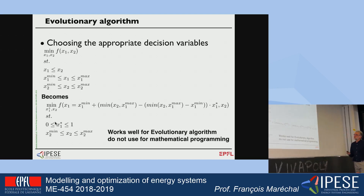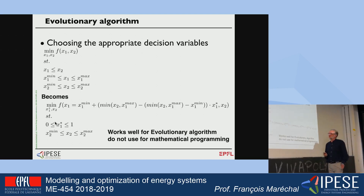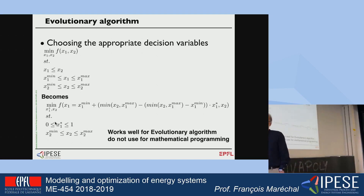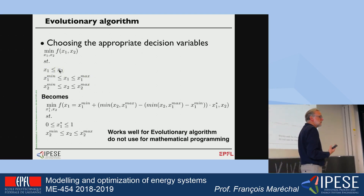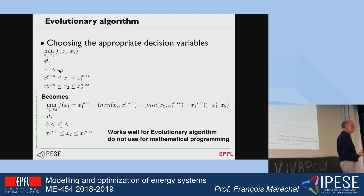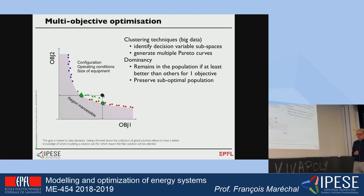This transformation allows solving the problem without having many infeasible values of x1 greater than x2 appearing, which would happen if selected randomly. This is a useful formulation trick when working with evolutionary algorithms.